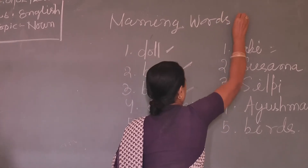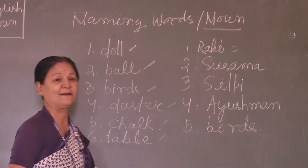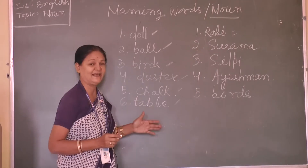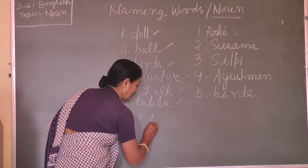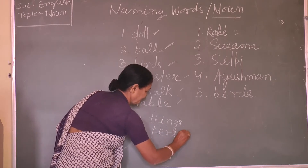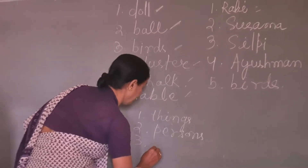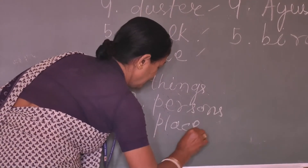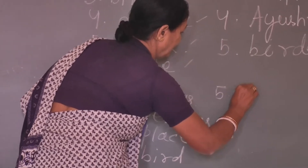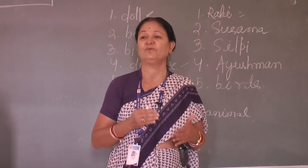The naming words are otherwise called noun. So your chapter is noun, or the naming words. Names of things, names of persons — we are living in Bhubaneswar, so the name may also be a place. The naming words may also be a bird or animal.